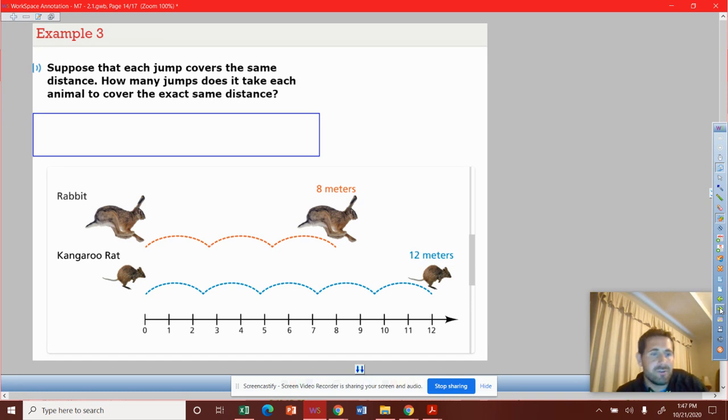So you got a rabbit who's doing three jumps. You got this kangaroo rat that's doing five jumps. But if you look, they've never landed at the exact same spot in any of these jumps. There's a couple spots that look close, like that first jump. It almost looks like they line up at three, but they don't.